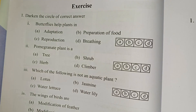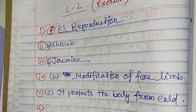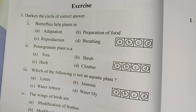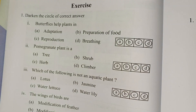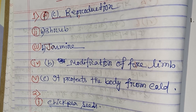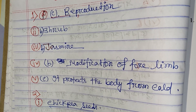Question No. 2: Pomegranate plant is a shrub. Option 3. Question: Which of the following is not an aquatic plant? The answer is jasmine. Question 4: The wings of a bird are a modification of the forelimb.